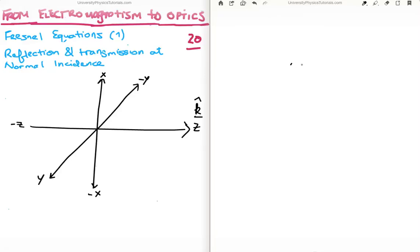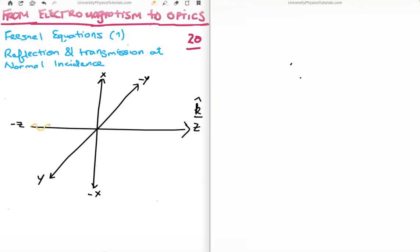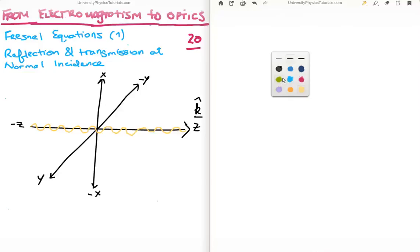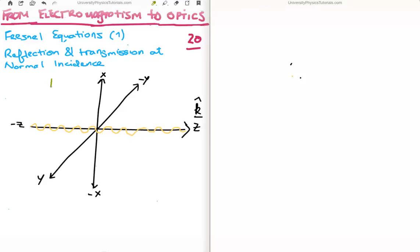Our electromagnetic field is propagating in the direction to the right — it could be plane waves or anything you want. The field has both an electric and magnetic component. The electric component — the incident electric field — is polarized in the x-axis direction, and it's going in the k-hat direction.